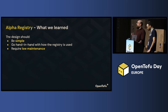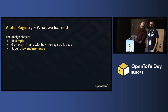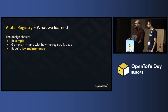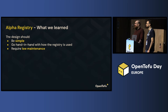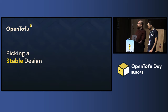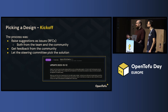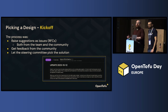We took away key learnings: keep it simple, don't keep adding lambdas and caching layers, and make it low maintenance. Errol and I were spending all our time looking in AWS X-Ray and CloudWatch trying to figure out why requests were failing. As an open source community with valuable developer time, we couldn't keep doing that. So alongside the alpha work, we went out to the community and started asking for RFCs — requests for comments — to design the stable registry.